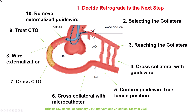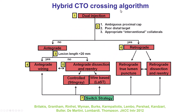Starting with the first step, which is to decide that the retrograde approach is the next step. In the original hybrid algorithm, the retrograde approach was recommended for lesions with an ambiguous proximal cap, poor distal target vessel, or lesions with a long occlusion length, as long as there were appropriate interventional collaterals — meaning collaterals that the operator felt were conducive to being crossed with wires and microcatheters.